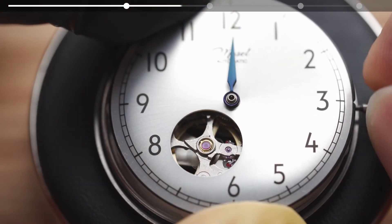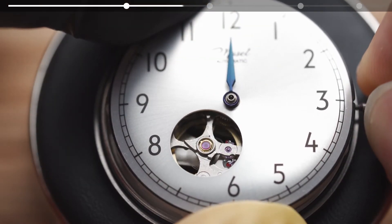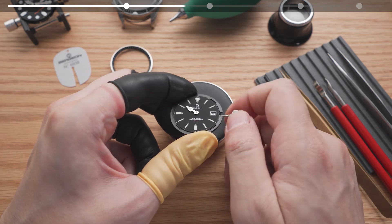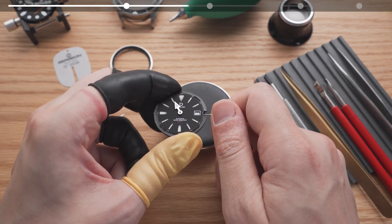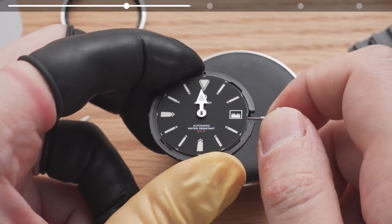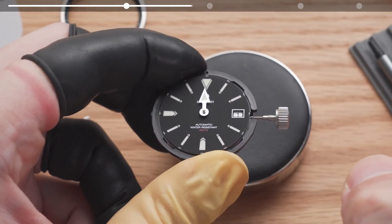If you have a movement with a date function, let's set the time forward by 24 hours and do a quick check. The date is transitioning when the hour hand is almost pointing at midnight. This is good enough.